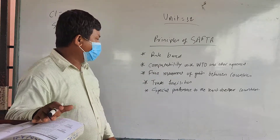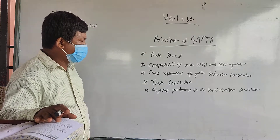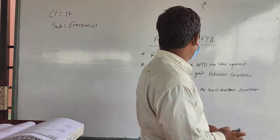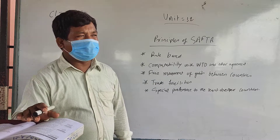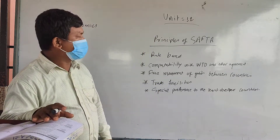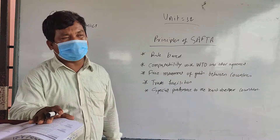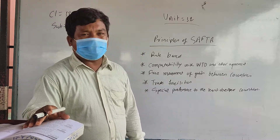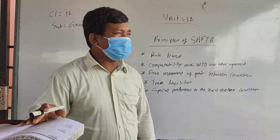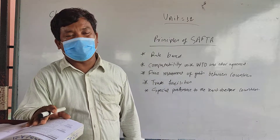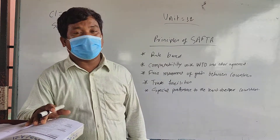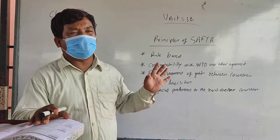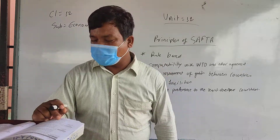Number one is rule-based. SAFTA is an institution which does every activity through rules and regulations. SAFTA has formed some rules and regulations, and according to those rules and regulations, its activities are carried out. SAFTA is established to facilitate trade among all SAARC nations, and to do its activities, it also has some rules and regulations which countries follow through protocols.